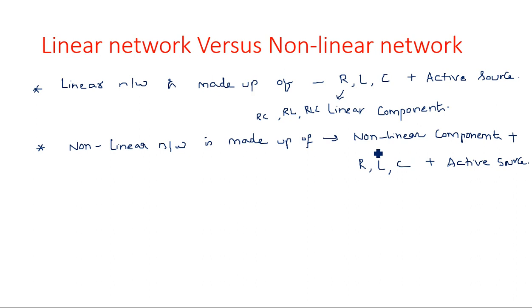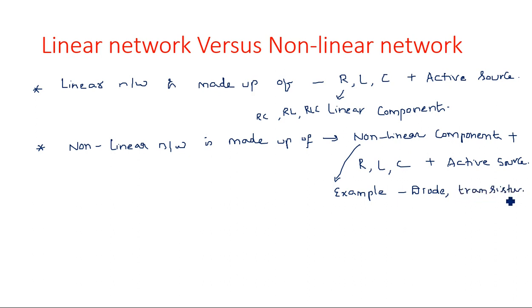Examples of nonlinear networks include nonlinear components like a diode, transistor, SCR, or triode — any type of nonlinear device. Along with these nonlinear components, there will also be a resistance, capacitance, or inductance, plus some active source to pass current through the network. This is how a linear network and a nonlinear network are generally defined.